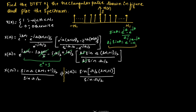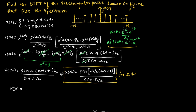So this is the expression for the Fourier transform of the given discrete signal. This is for ω not equal to 0. If we take ω as 0, we can write X(0) will be equal to 2n1 plus 1. So this is the expression for ω equal to 0.